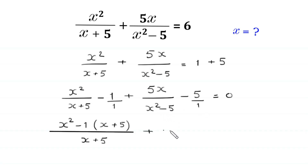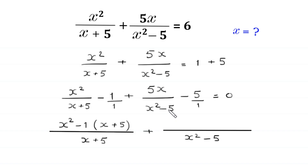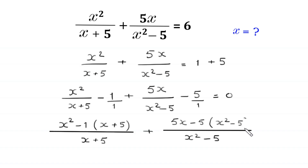Similarly, we write the denominator of the 5 as 1, and take the LCM of 1 and x squared minus 5. The LCM of 1 and x squared minus 5 is x squared minus 5. So 1 times 5x is 5 times x, and x squared minus 5 divided by 1 is x squared minus 5. We multiply negative 5 by x squared minus 5, equal to 0.